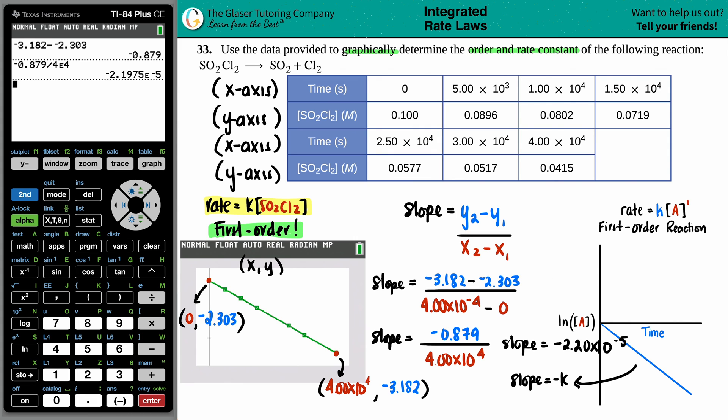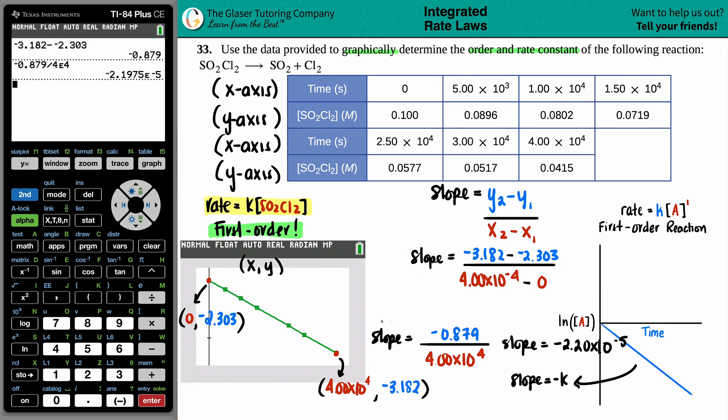So my k value, K equals 2.20 times 10 to the negative fifth. Now keep in mind that the units for k is always going to be dependent on the total order. In this case, we found out that the total order is one. So if you have a total order of one, just know that the units for k for a total order of one is always going to be your time to the minus one. So just make sure that you're in seconds or minutes or hours. But in this case, we are in seconds. So this would be 2.20 times 10 to the negative fifth seconds to the minus one. And that is the k value for this one.